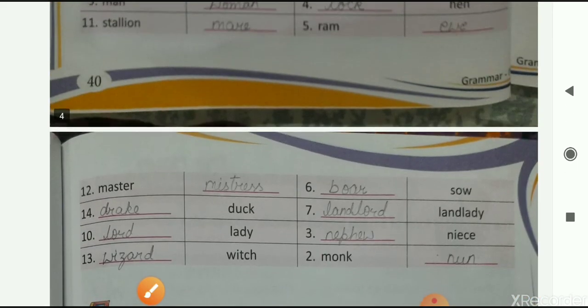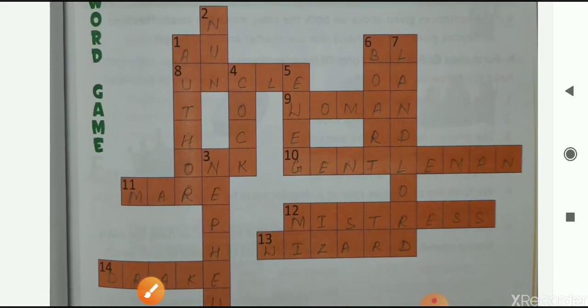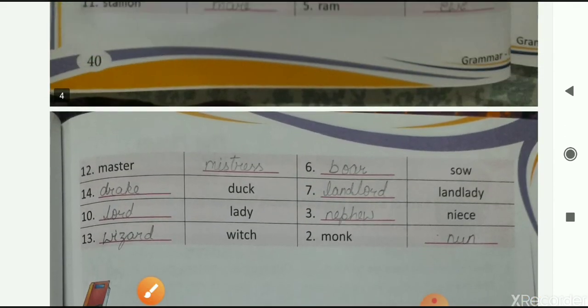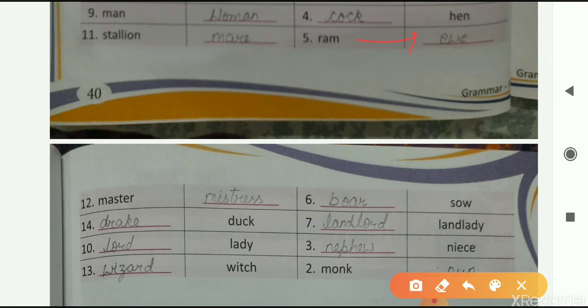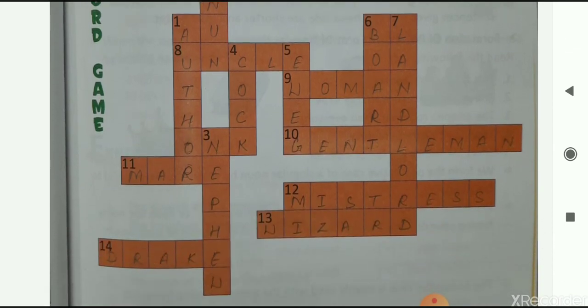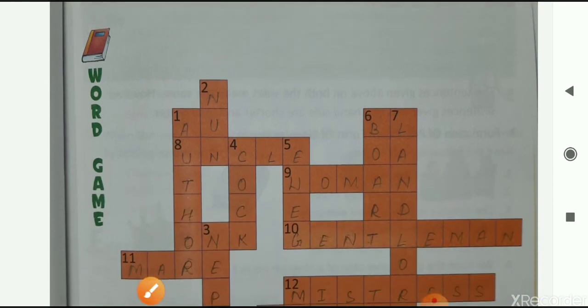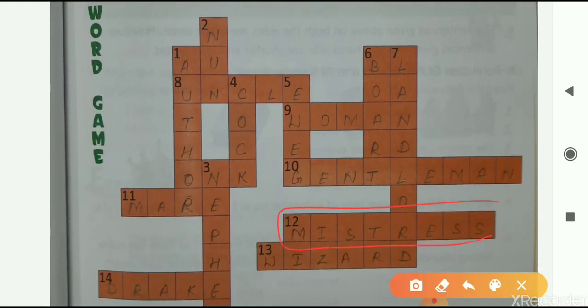Next one is hen, H-E-N. Its masculine is cock, C-O-C-K. So write here cock on number 4, C-O-C-K. Next one is ram, R-A-M. Its feminine is ewe, E-W-E. So write here E-W-E on number 5. Next is master. Its feminine noun is mistress. So write mistress on number 12, M-I-S-T-R-E-S-S.